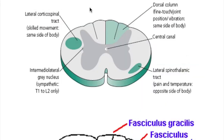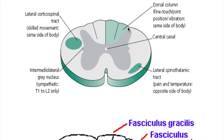A lesion in the posterior column produces defects in sense of position, pressure, vibration, and fine touch on the same side of the body. A lesion in the descending lateral corticospinal tract produces defects on the same side of the body, causing an upper motor neuron type of lesion — that is, spastic paralysis and hyperreflexia.